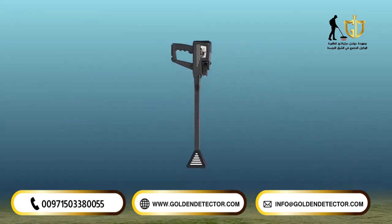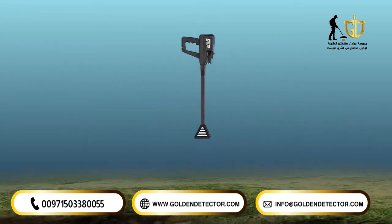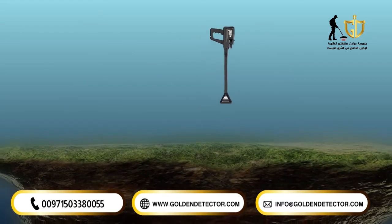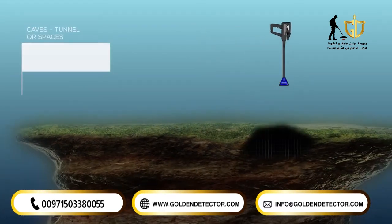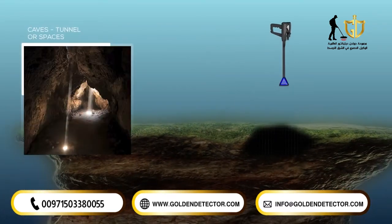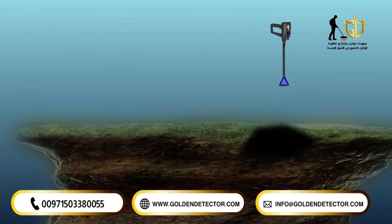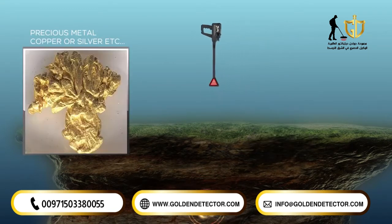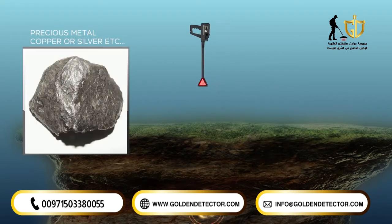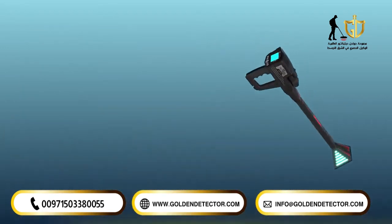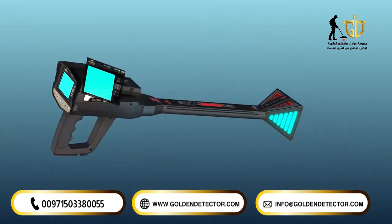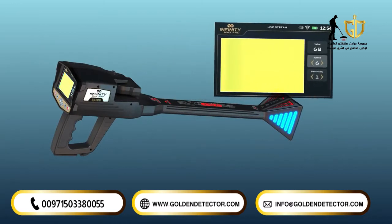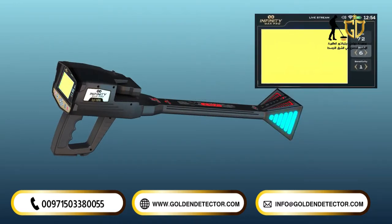For example, the LED lights will light up in blue when passing over a cavity or space such as a tunnel, and light up red when passing over a precious metal such as copper or silver. The signals captured by the VST probe are represented on the screen of the device as a continuous color stream that changes colors according to the type of potential target.